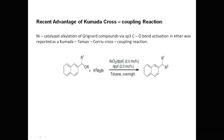This is a recent advance of Kumada coupling reaction. Previously, aryl halide or vinyl halide was used, meaning C-X bonds were activated. Now, an ether compound with a Csp3-O bond can react with a Grignard reagent in the presence of nickel catalyst to give an alkylated coupled product, where the sp3 carbon–oxygen bond is activated. This has also been reported as a Kumada cross coupling reaction. Thank you so much for watching this video.